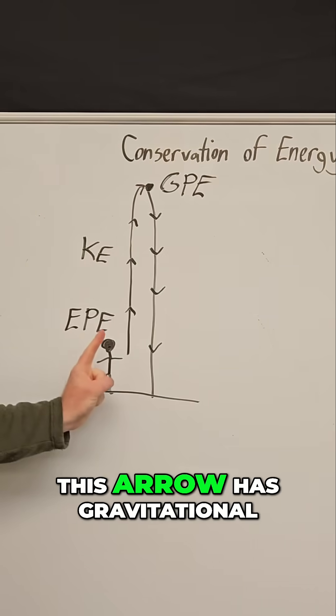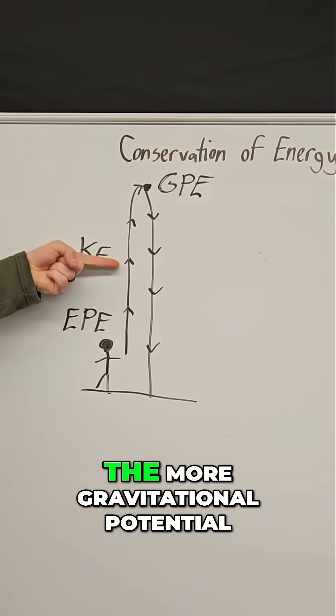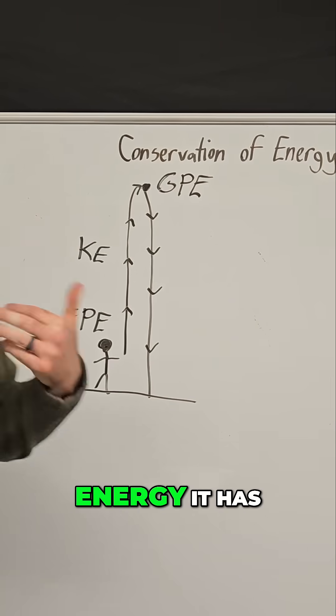So technically, this arrow has gravitational potential throughout this flight, and the higher it gets, the more gravitational potential energy it has.